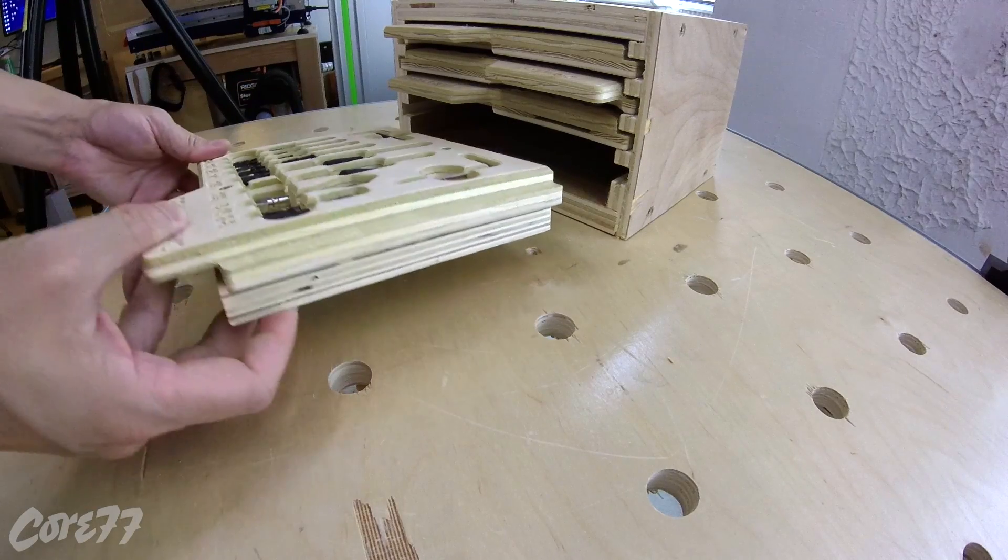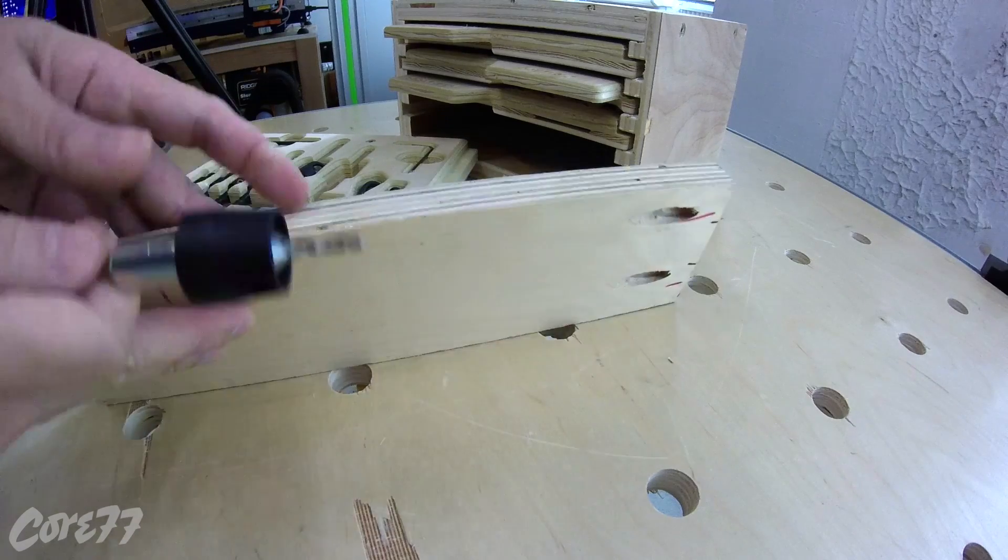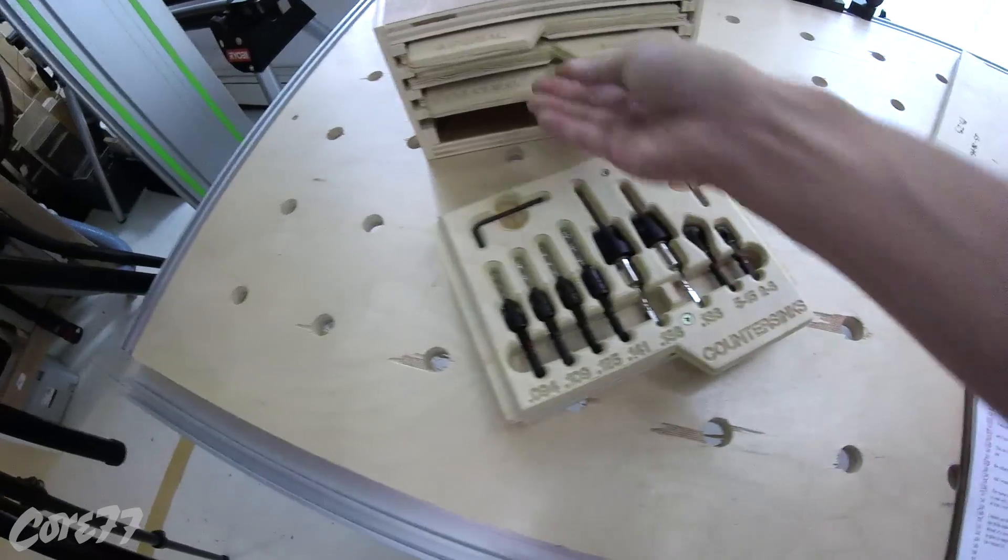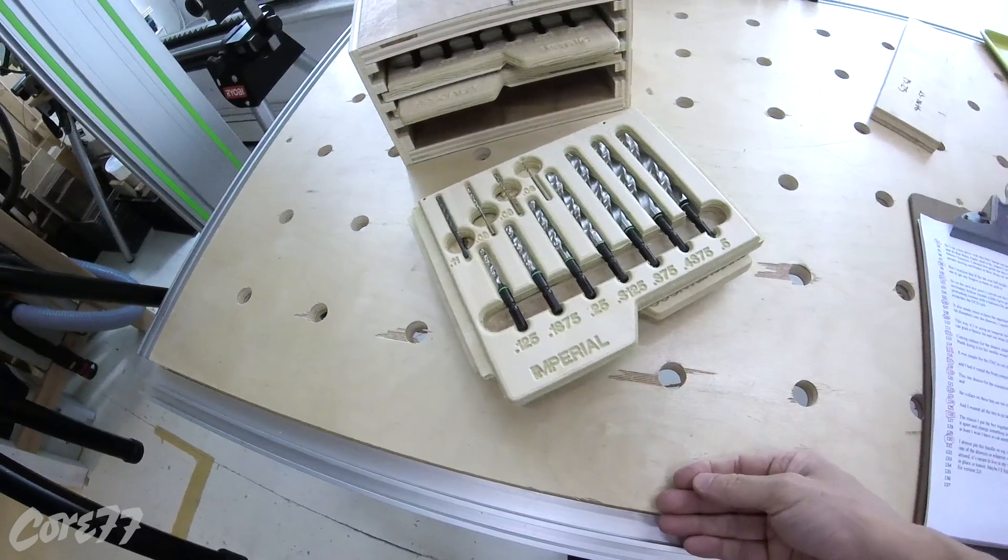This one drawer for the countersinks had to be made double height because I'm using three-quarter inch ply and the collars in these bits are just too tall to lay within a single sheet. And I wanted all the bits to sit below the surface so that I could stack stuff on top.